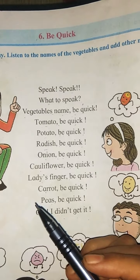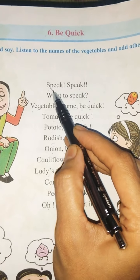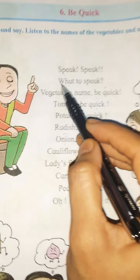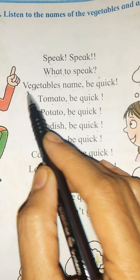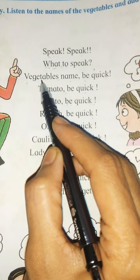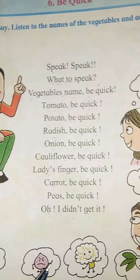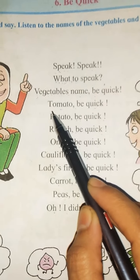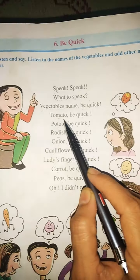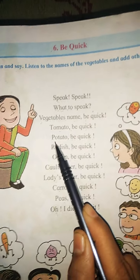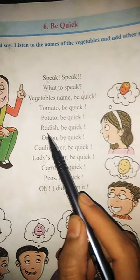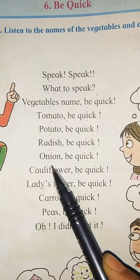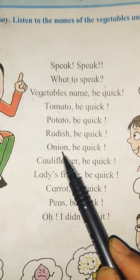Matlab idhar sab vegetables ke naam diye hain. Speak ka spelling kya hai? S-P-E-A-K. What? W-H-A-T. Vegetable's? V-E-G-E-T-A-B-L-E-S. Vegetable's name yianne kya? Naam. Tomato ka naam liya. Tomato ka spelling kya hai? T-O-M-A-T-O. Potato: P-O-T-A-T-O. Baad me kya hai? Radish: R-A-D-I-S-H. Onion: O-N-I-O-N.